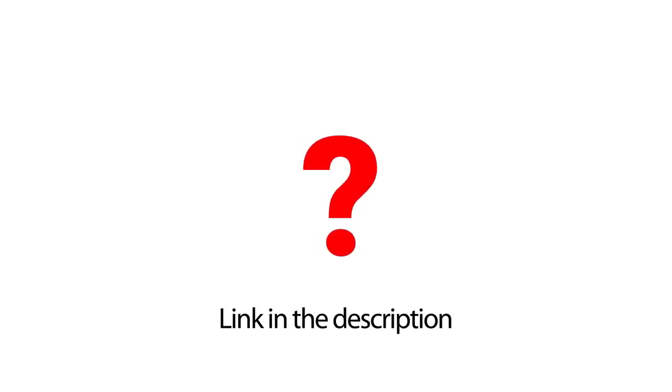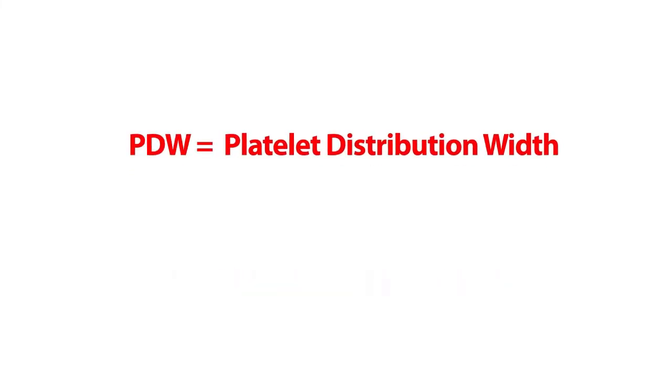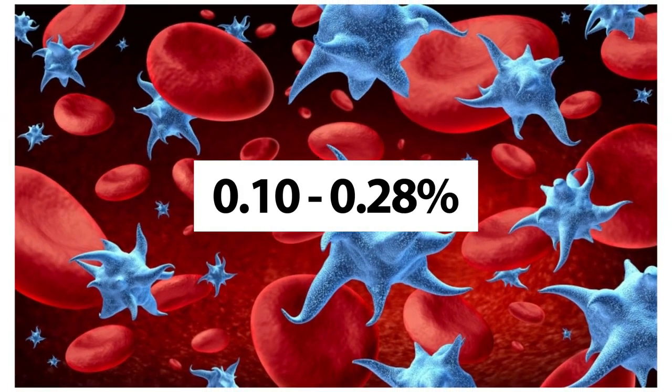MPV stands for mean platelet volume, which is the average volume of a platelet found in circulation. The normal range of MPV is about 7 to 11 femtolitres. Platelet distribution width, or PDW, is a measurement of how similar the platelets are in size — a high PDW means a great variation in size. The normal level of PDW is about 10 to 18%. Thrombocrit, or platelet crit, is the percentage of blood volume occupied by platelets, which is about 0.10 to 0.28%.